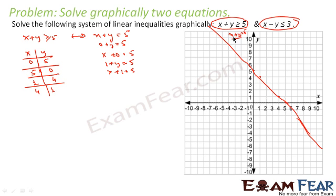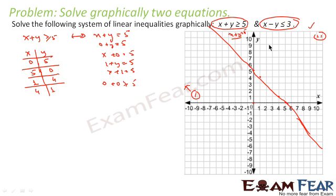This line divides the plane into two regions — region 1 and region 2. Let's check which region satisfies the inequality. We'll take the test point (0, 0): 0 plus 0 is greater than or equal to 5, so 0 is not greater than or equal to 5. That means region 1 does not satisfy the condition, so region 2 satisfies the condition. Now let's create the graph for the other line.